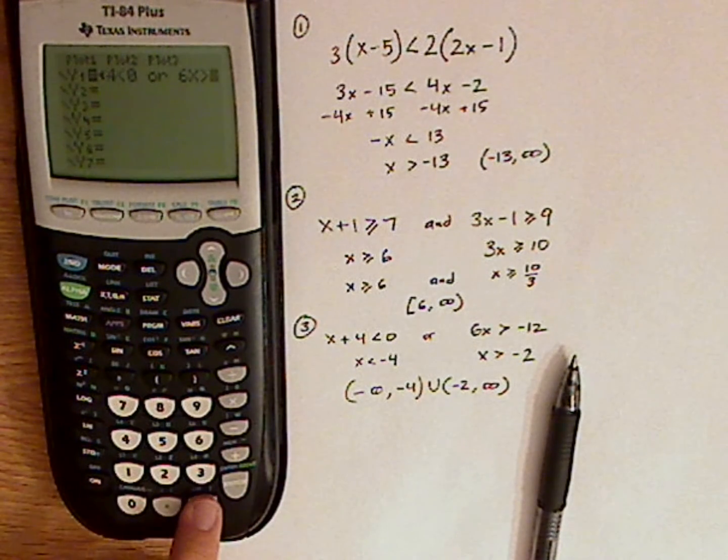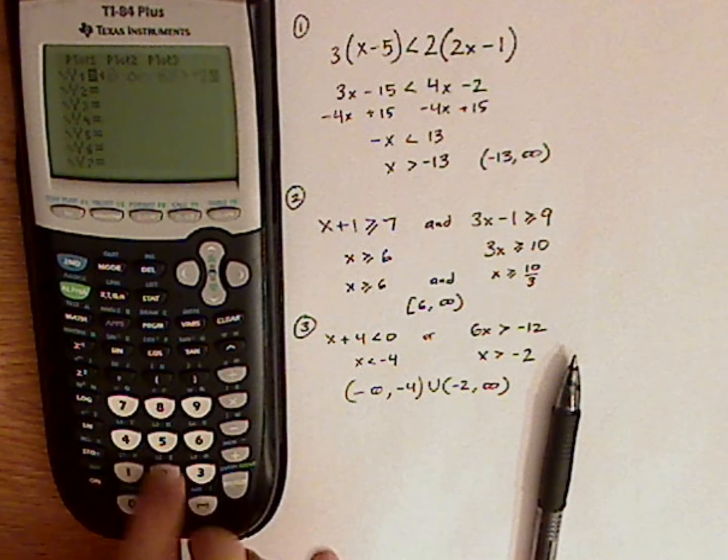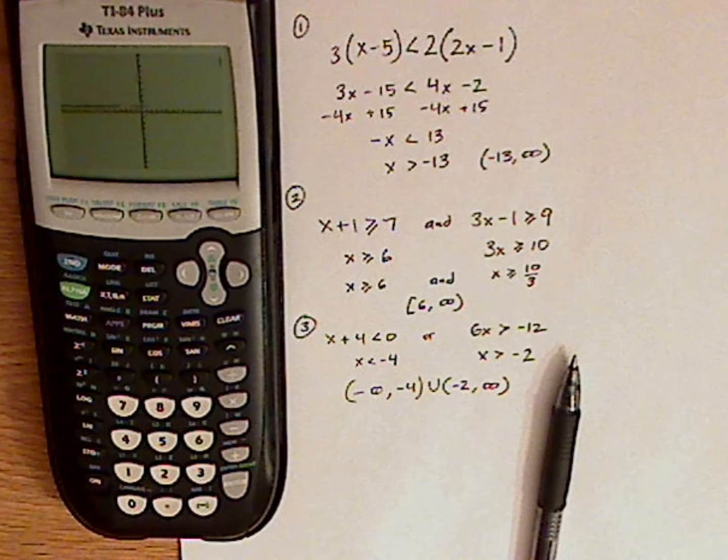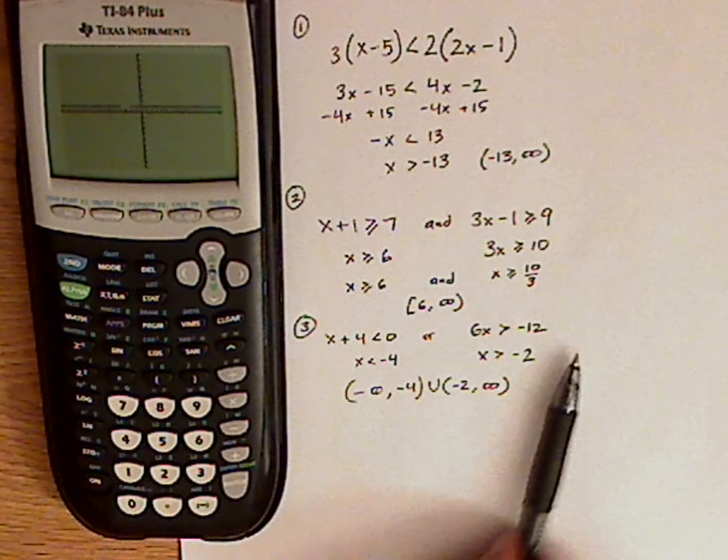Now, it's a negative 12. Don't push the minus sign. Push negative. Negative 12. And then graph.